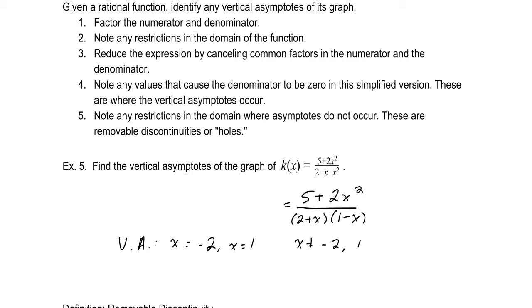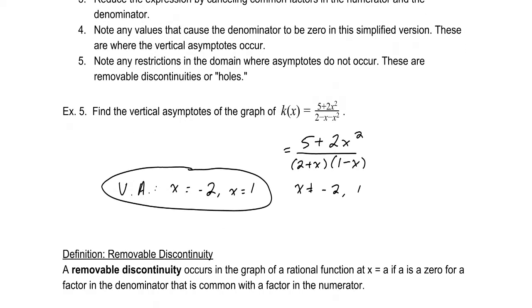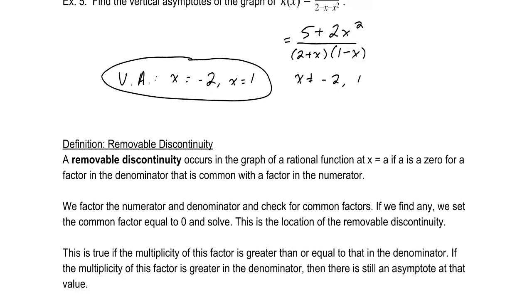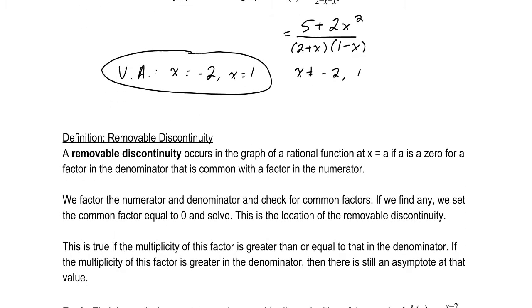Since neither of those factors canceled, we do not have removable discontinuities. A removable discontinuity occurs when a factor is common to both numerator and denominator and cancels — those are the holes.